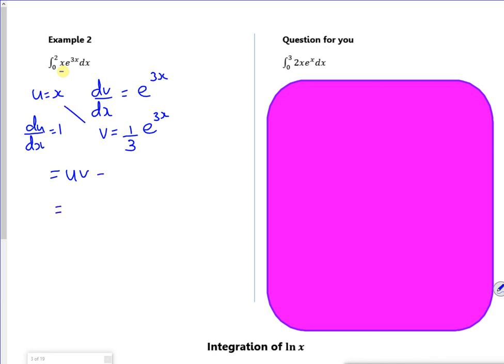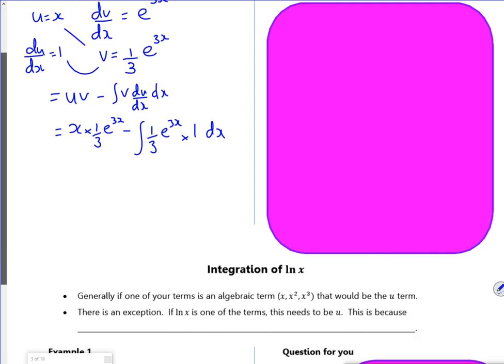Now the formula is uv, which is that bit. So that's going to be x times by a third e to the 3x minus the integral of v du dx dx. So v is the third e to the 3x multiplied by 1. I always put my bits in and then simplify it. Always simplify it before you try and do anything with it. Some stuff might cancel out. Some stuff just might look a little bit easier once you simplify it. So I always try to literally take a step back and stop to do it.